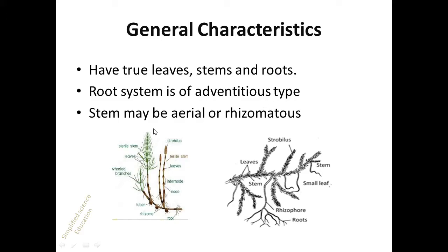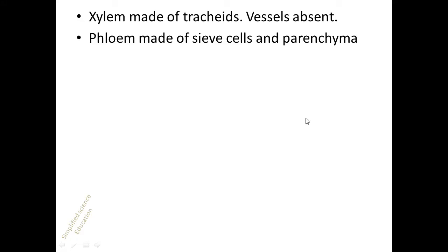Pteridophytes have true leaves, stems, and roots. The root system is of adventitious type, meaning roots develop other than from the radicle. The stem may be aerial as in Equisetum, or rhizomatous, meaning it creeps along the ground.